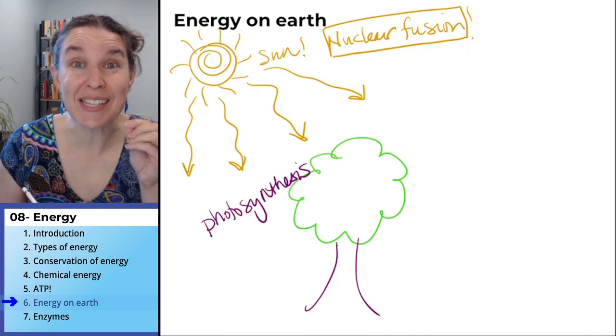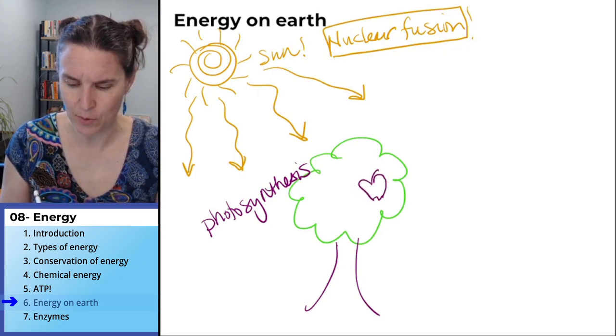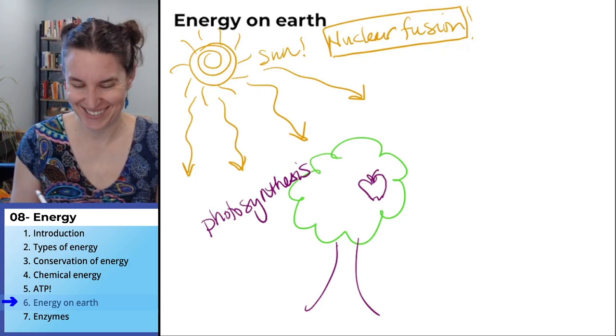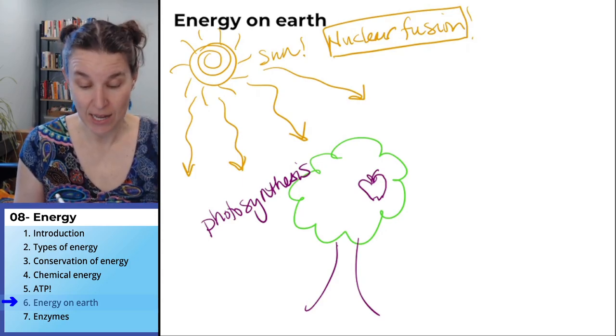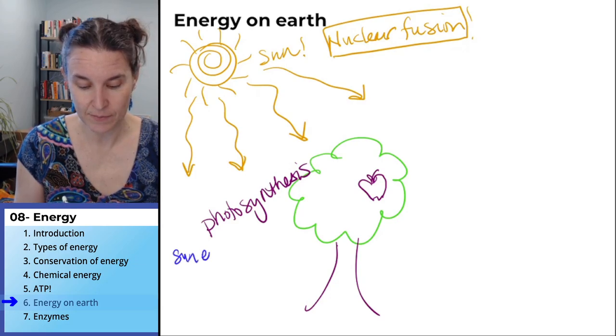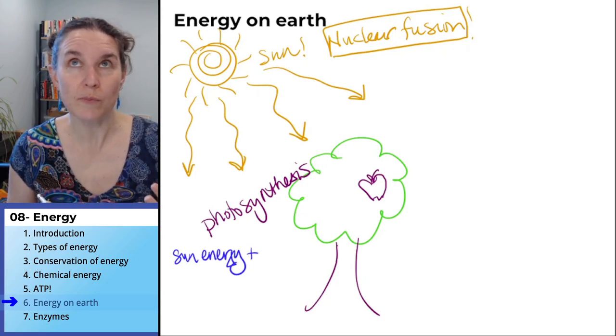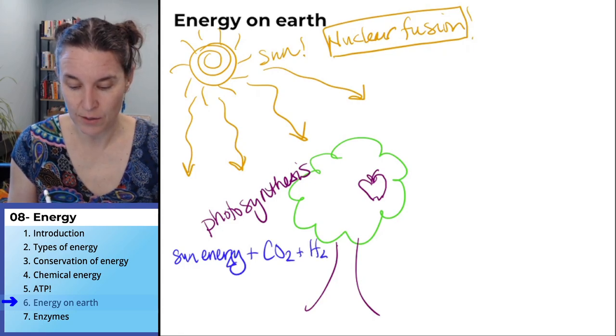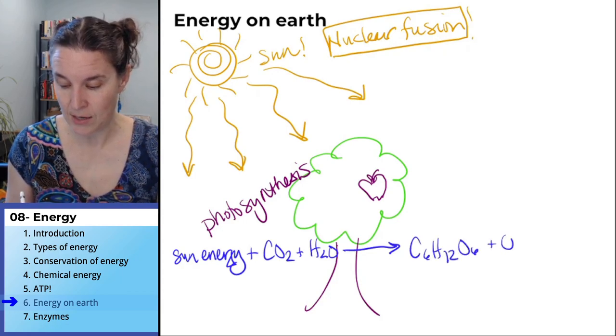And they use the energy from the sun to build sugar. That's supposed to be an apple. It's something that you can eat. Photosynthesis, the equation for photosynthesis, is energy from the sun is used to fuel carbon dioxide and water being turned into glucose, C6H12O6, and oxygen.